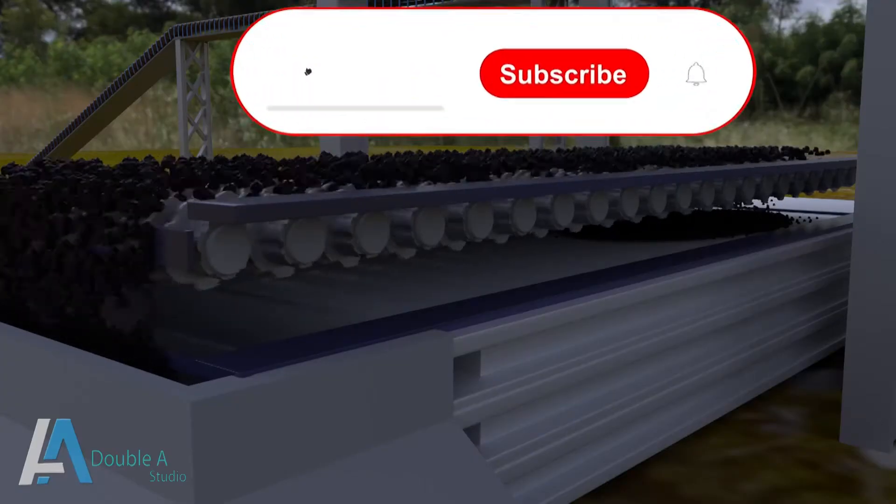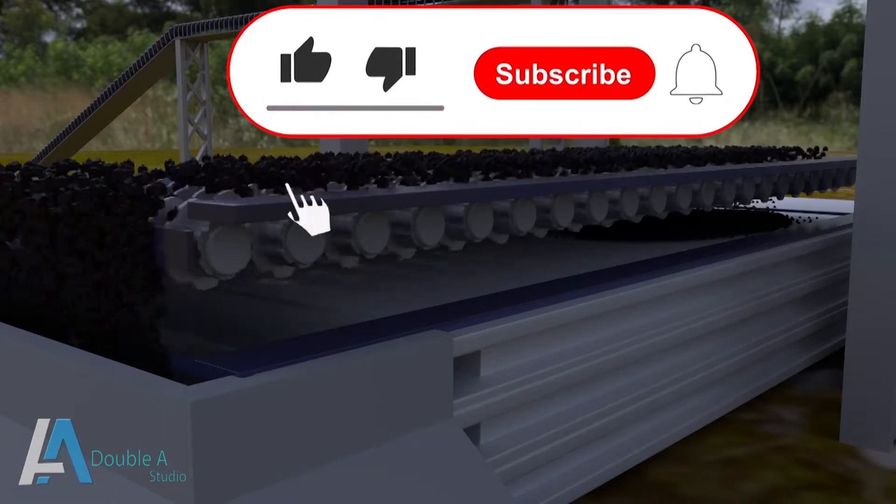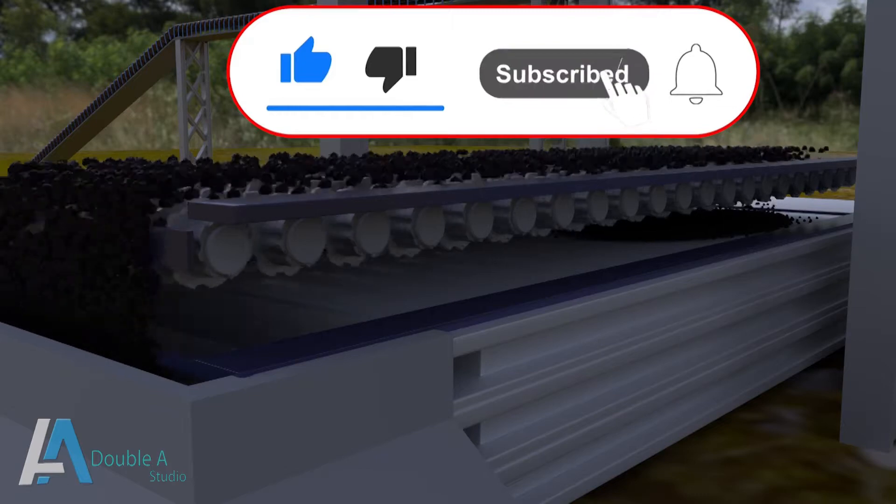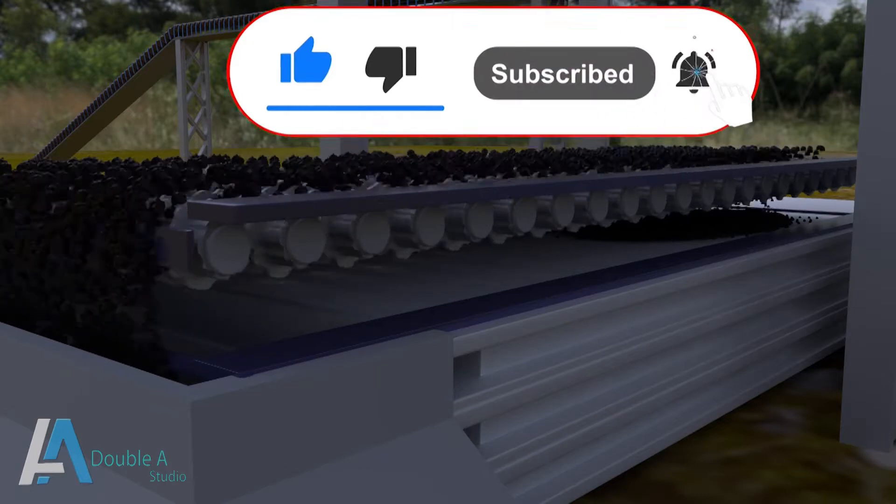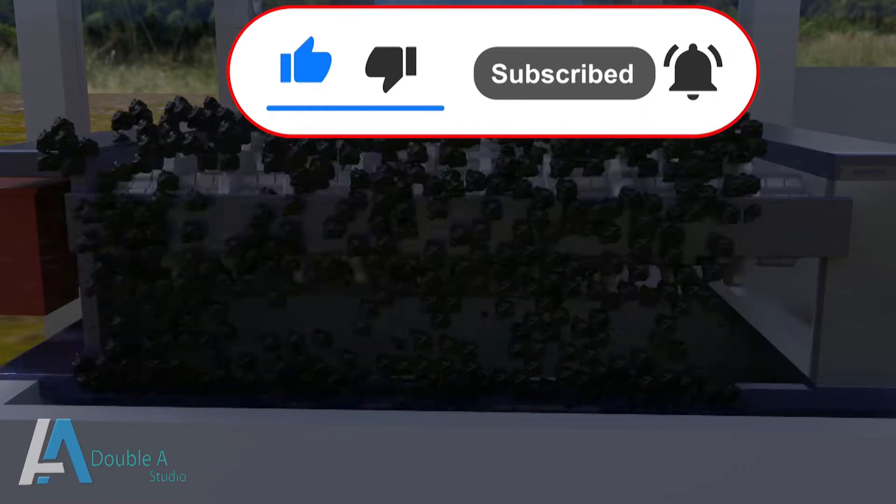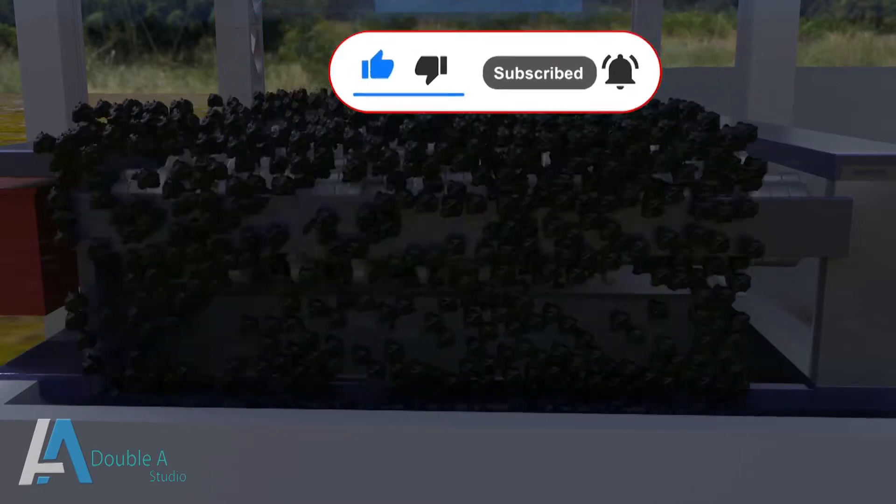In the previous video we have seen that coarse coal is segregated from fine coal through roller screens. Fine coal bypasses the crusher and is collected separately, whereas coarse coal flows down the chute of the roller screen and is fed to the mouth of the crusher.